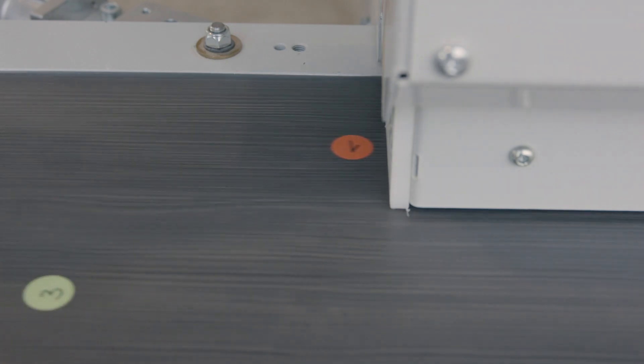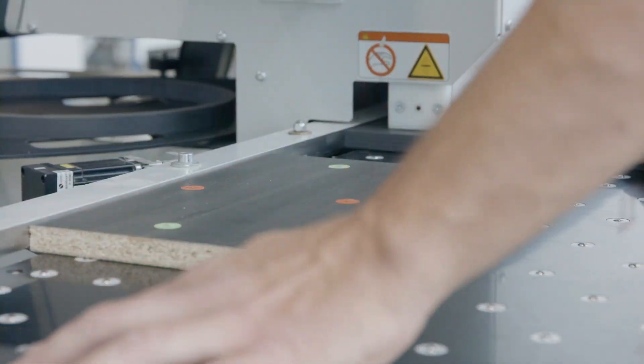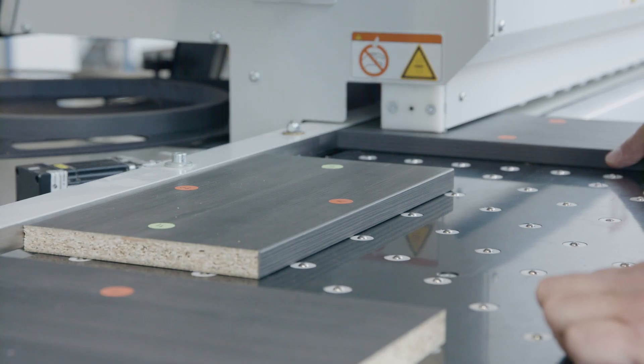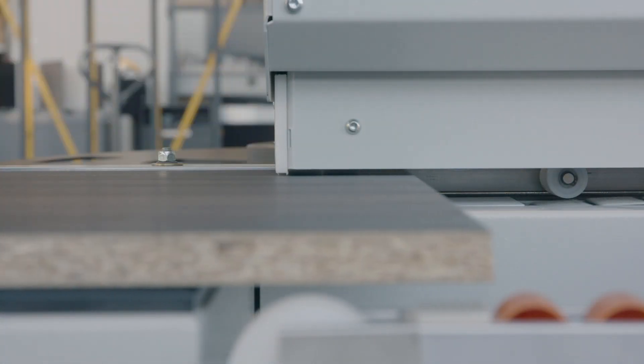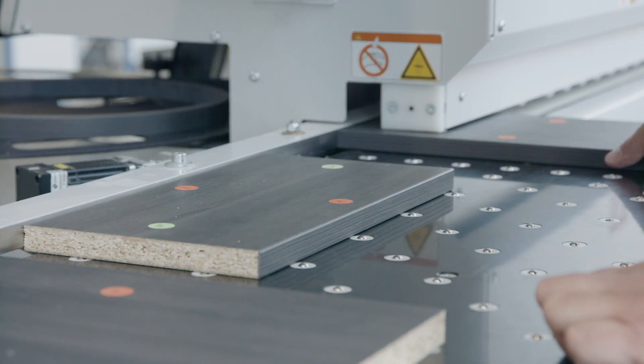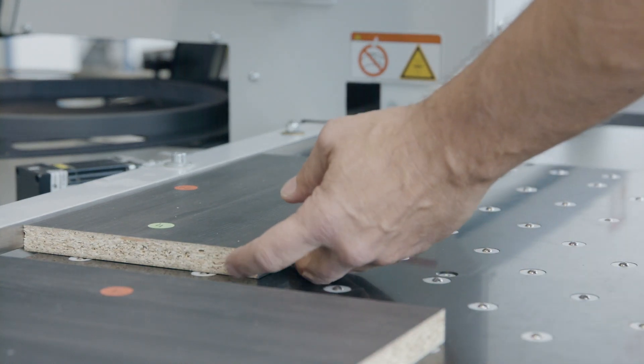The Auriga, if necessary, is able to run up to 1.5 kilometers of edges in just one shift, and all this in excellent quality with zero joints.